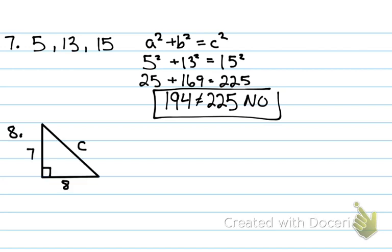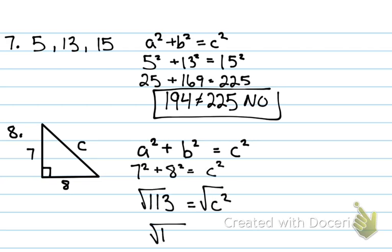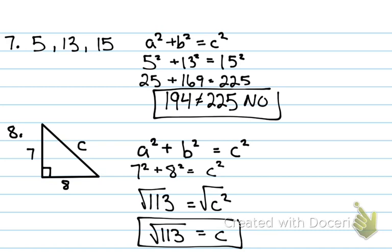The next question says find the unknown side length — this is where we struggled on the quiz. Read the directions: if they say approximate to the tenth or to the integer, change it to a decimal. If it says simplest form, leave your answer under the radical. For example: 7² + 8² = c², so 113 = c². The square root of 113 cannot be simplified further. The directions said to simplify it, so simplest form means leave it under the radical.